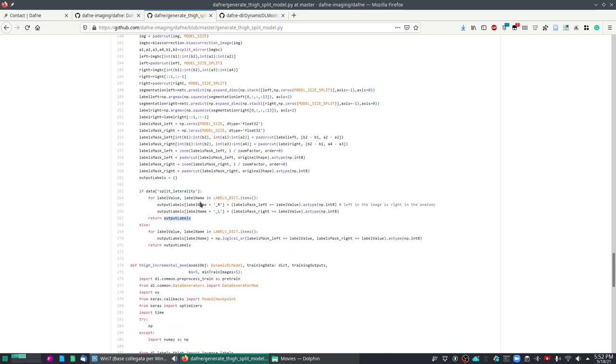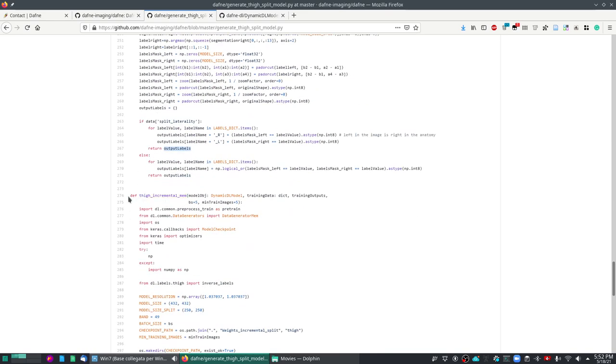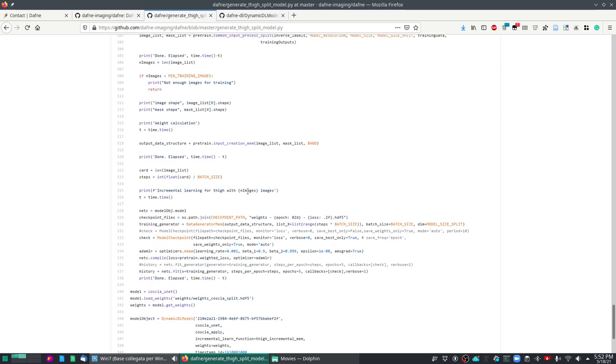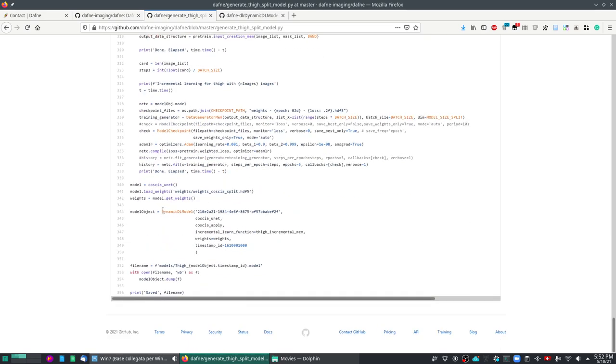So these are all functions that are defined as unbound. So you see this is not part of a class, these are normal top-level functions that accept the dynamic dl model as the first object. And then the actual dynamic dl model is built in this statement passing the relevant initialization, apply functions and incremental learn functions.